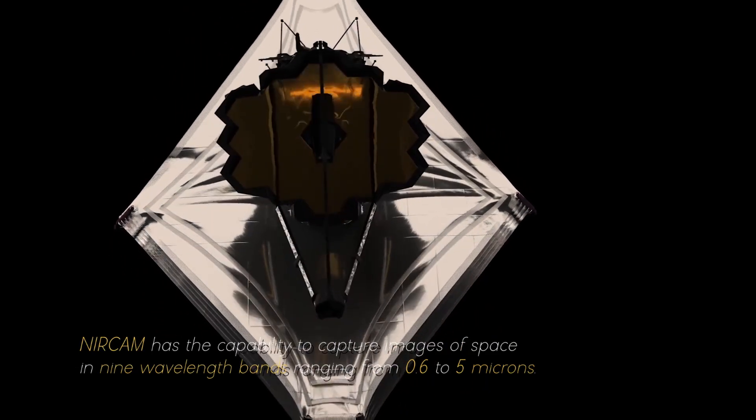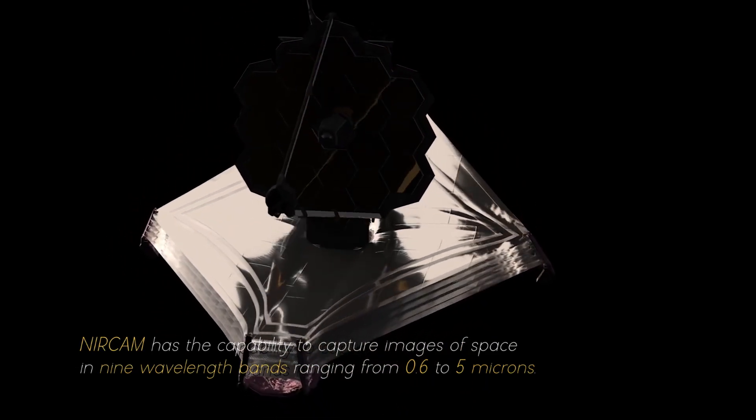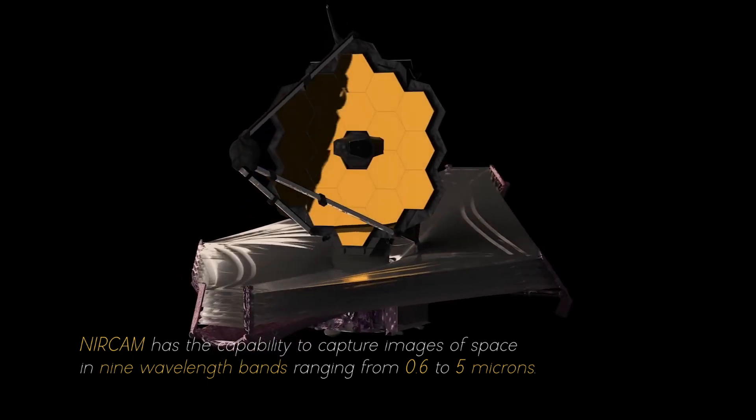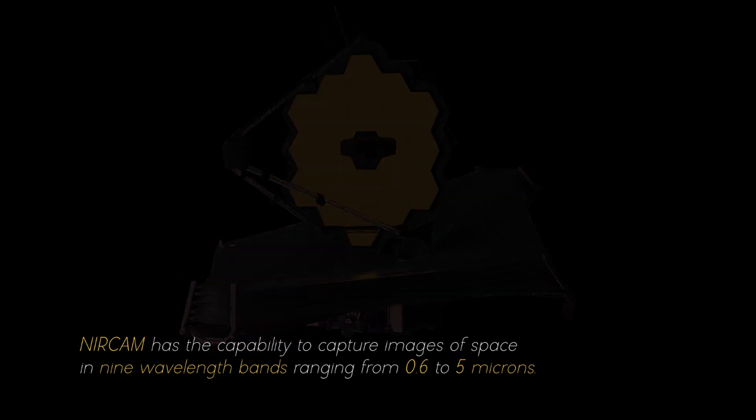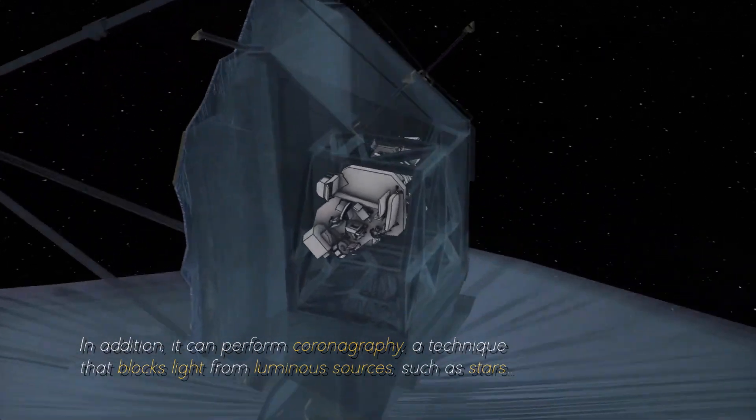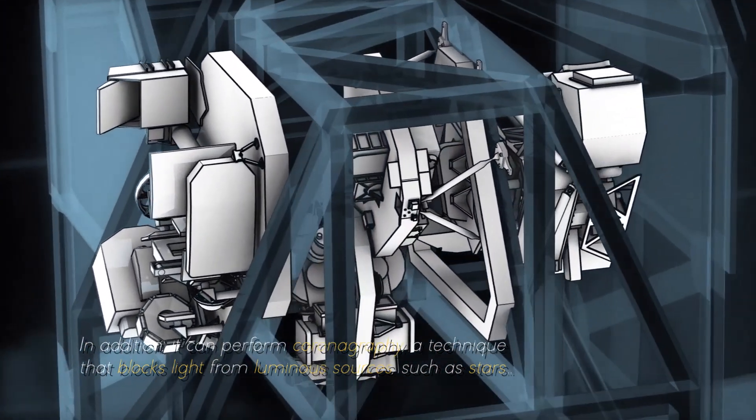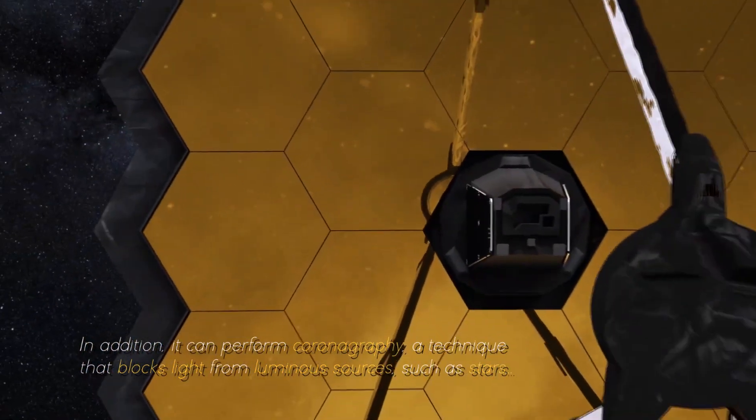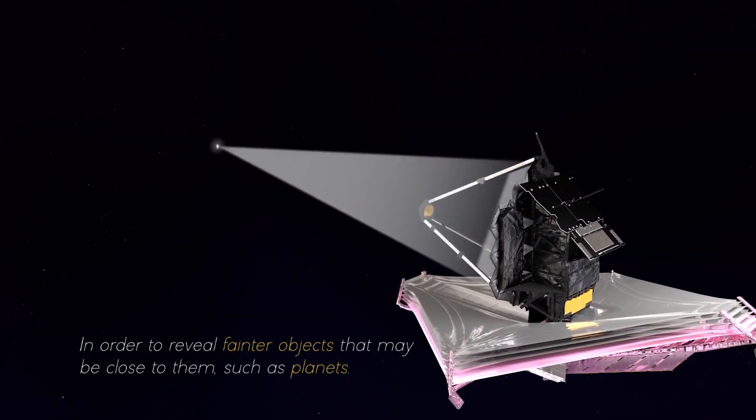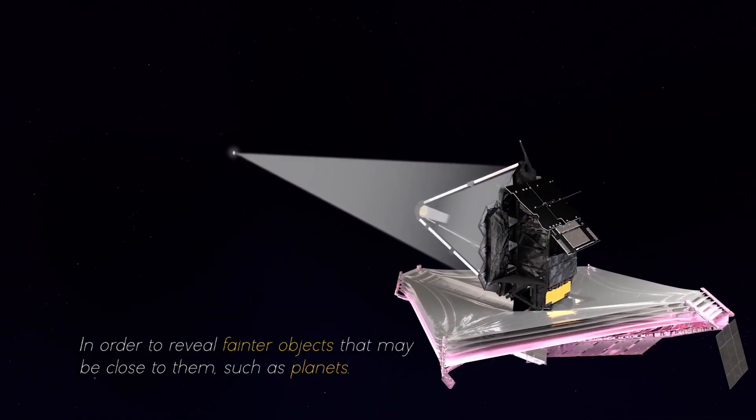NIRCam has the capability to capture images of space in nine wavelength bands, ranging from 0.6 to 5 microns. In addition, it can perform coronography, a technique that blocks light from luminous sources, such as stars, in order to reveal fainter objects that may be close to them, such as planets.